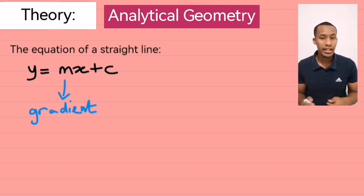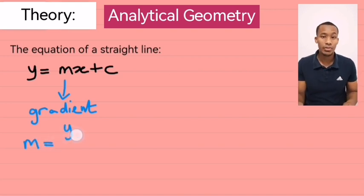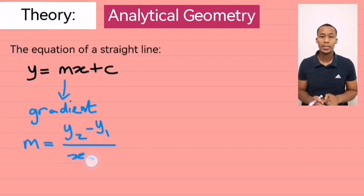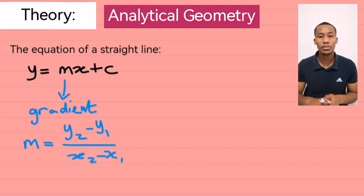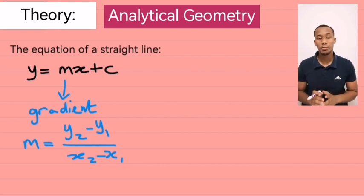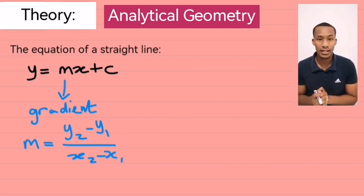Okay, so to calculate the gradient of a line, we could use the formula m equals y2 minus y1 over x2 minus x1. And to use this formula, you need two points on the line. Substitute the coordinates to those points and you'll be able to find the gradient that way.